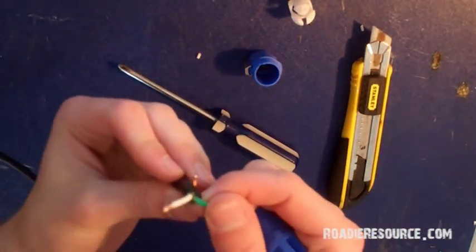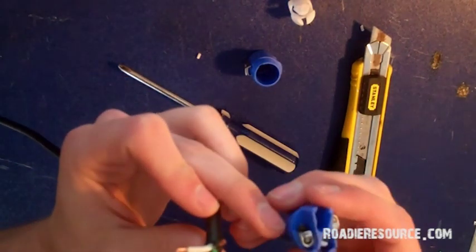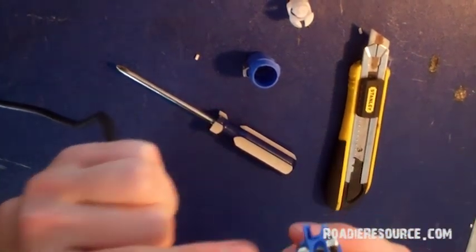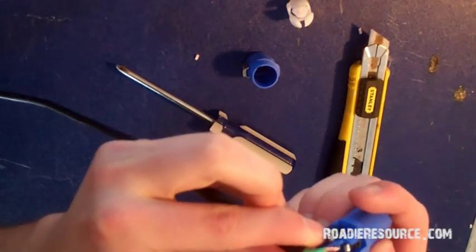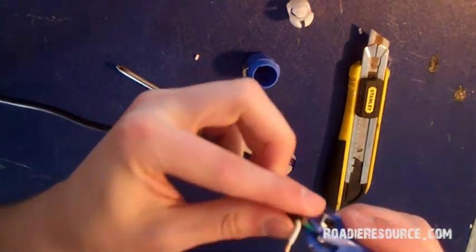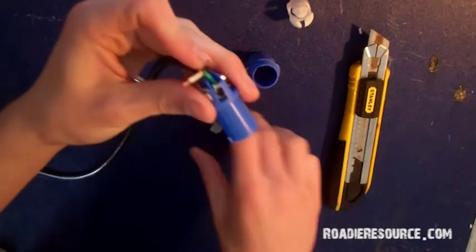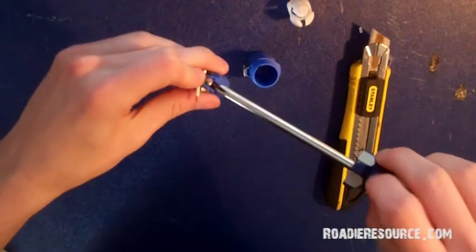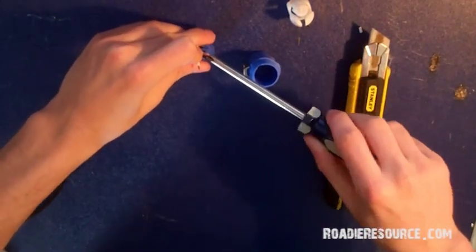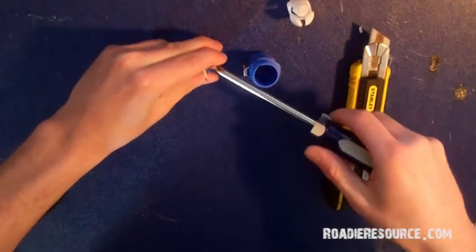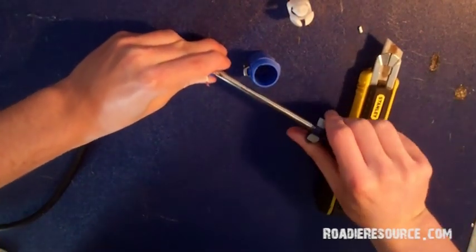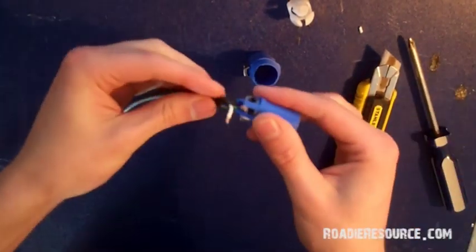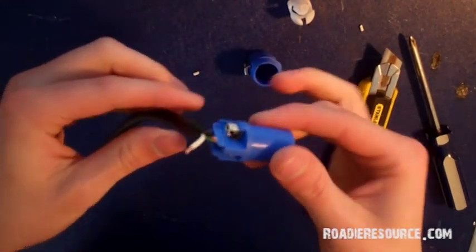I'll first connect the ground wire, which goes in the middle one. And I'll push that in there and tighten that using my Phillips screwdriver, making sure to get it nice and tight so that won't pull out. There's one.